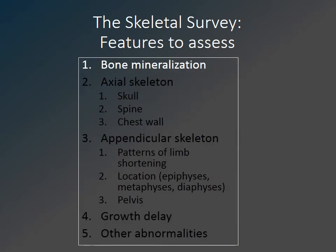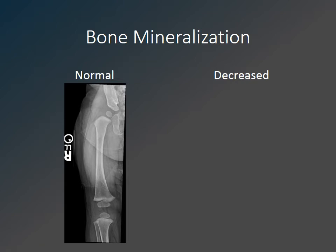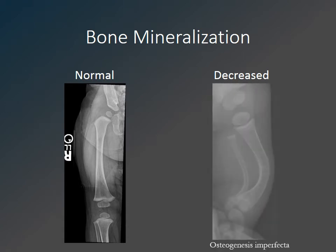We will begin by talking about bone mineralization. A background knowledge of the appearance of normal bones is necessary. On the left in a 9-month-old there is normal ossification of the cortex of the long bone with straight, normal alignment. On the right is a lower leg x-ray in a child with osteogenesis imperfecta, where the bone is not as ossified and the cortex is not as thick.